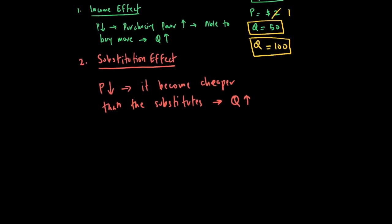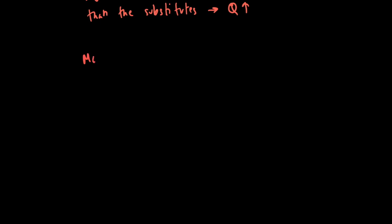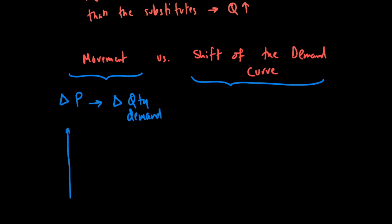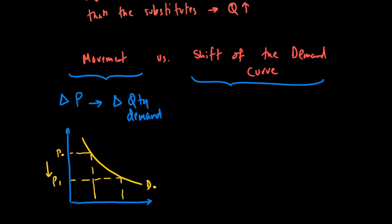The next discussion is about movement versus shift of the demand curve. If there's a change in price, we see a change in quantity demanded — this means we are moving along the demand curve. Any time there is a movement along the demand curve, it has to be because the price of the good is changing.